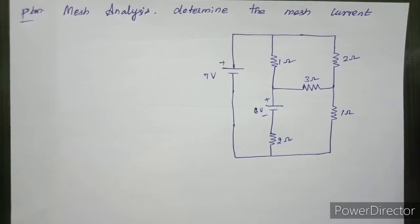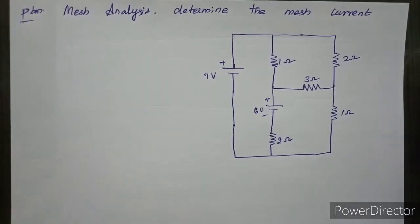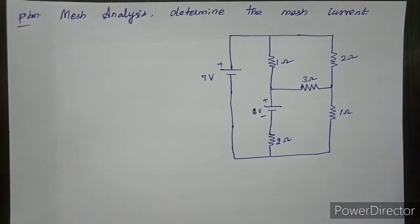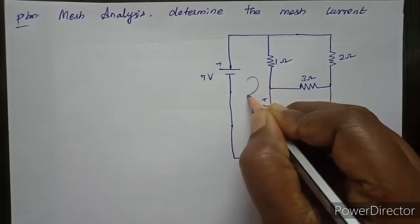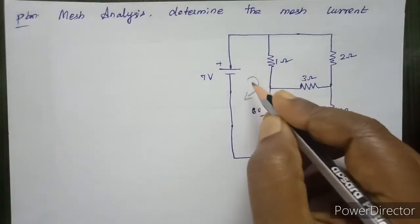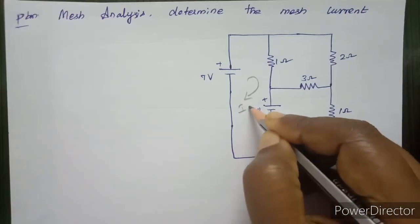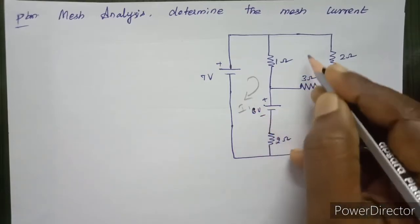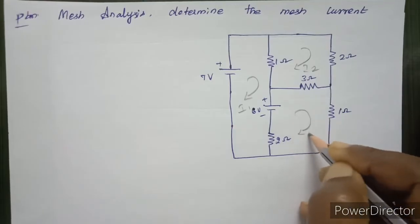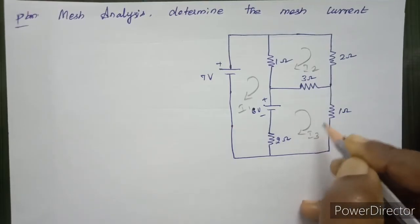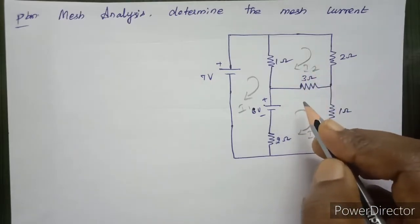We will see how to solve the mesh analysis. The first step is to assume the mesh current in the clockwise direction. This is a closed loop. We label the currents I1, I2, and I3. Always assume the clockwise direction.